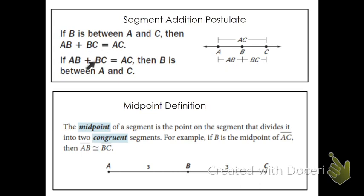If we think about this, don't be confused by the jumble of letters. If we look over here, it is saying that in a segment like this, with A, B, and C in order, this first part — that length — plus the second part — that length — equals the length of the entire segment. That's kind of a 'duh' thing. No one's gonna argue with you if you say that. That's why we call it a postulate.